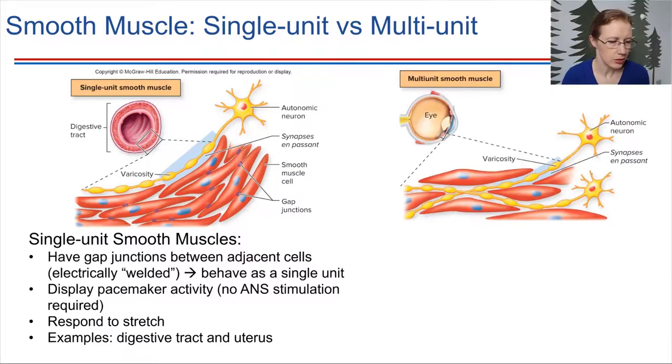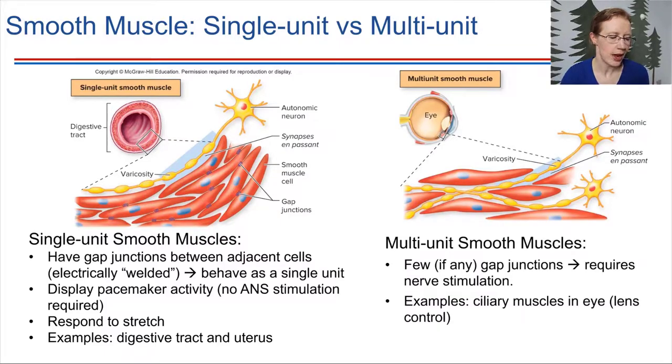The other type, multi-unit, these are smooth muscles that act more independently, more individually. They do not have the gap junctions between. And so instead, they have to pretty much individually be activated by a nerve. This requires nerve stimulation in order to get these to contract.